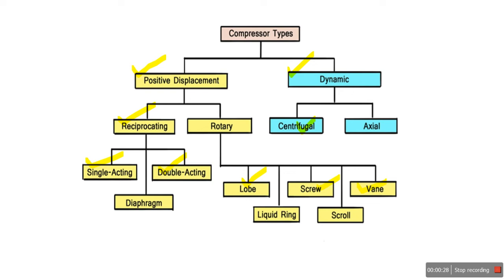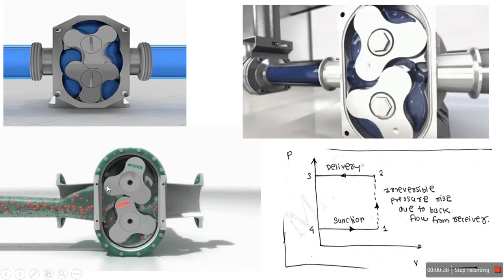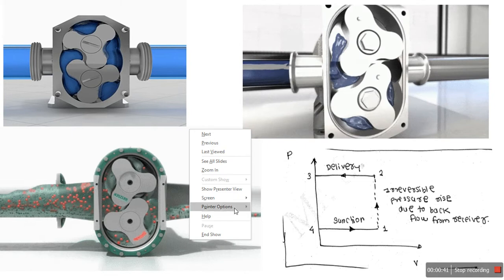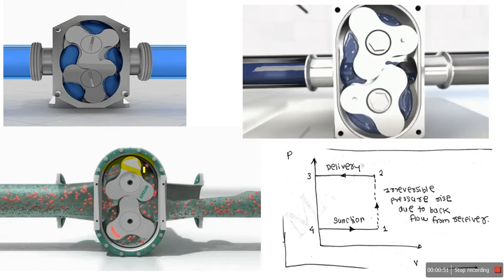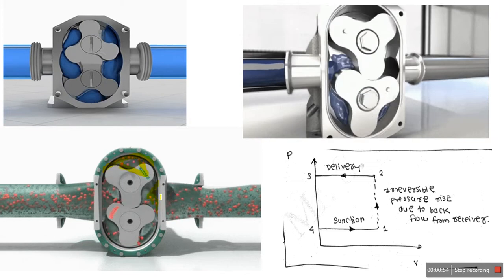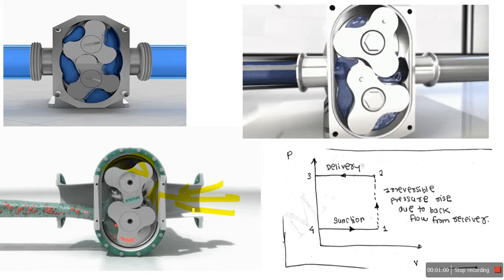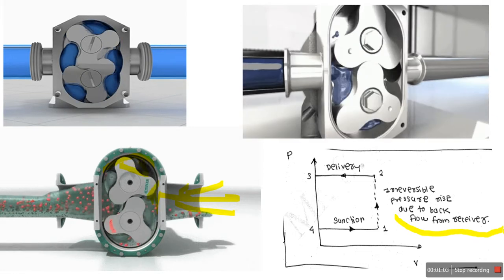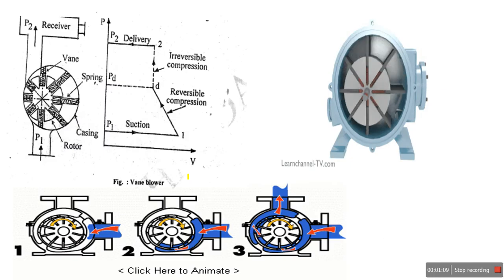Regarding the backflow of air — as seen in the previous video — in the lobe compressor we initially trap the air between the casing and the lobes. When that space opens to the receiver, some amount of air rushes back. That is the irreversible pressure rise due to backflow from the receiver. Today we look at the vane compressor: its construction, working, and PV diagram.